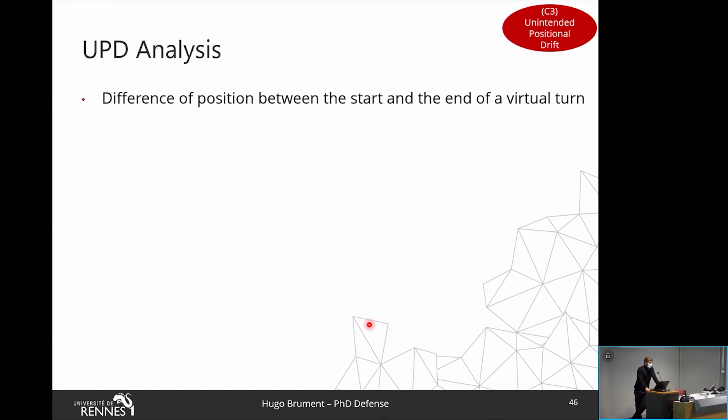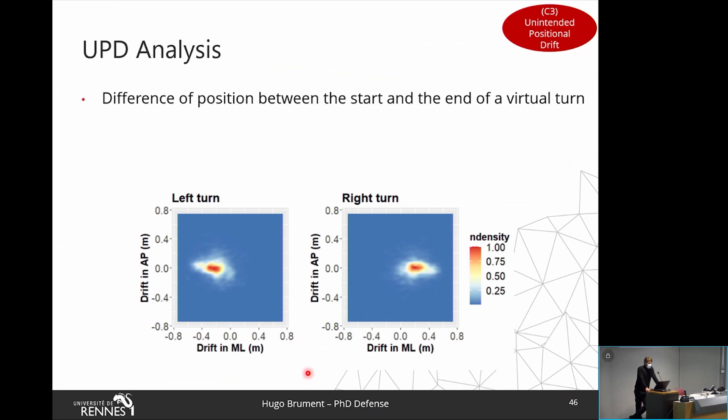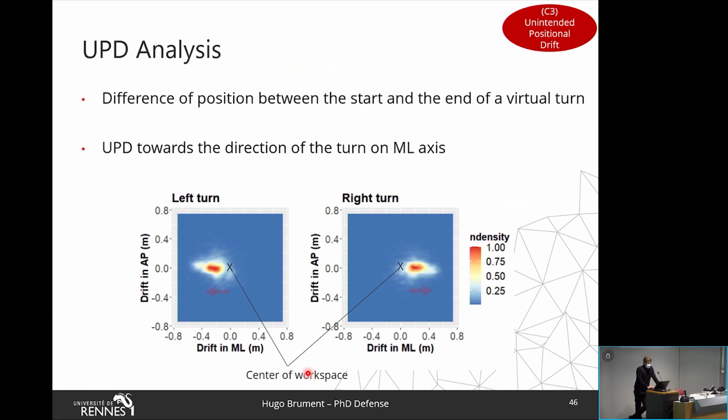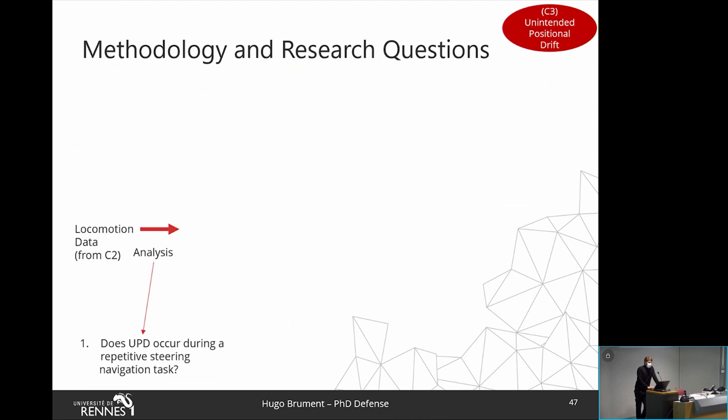Regarding the analysis of UPD, we computed the difference in users' position in the workspace between the start and end of each virtual turn. The density map shows users' position after a left turn or right turn, and there is UPD towards the direction of the turn on the ML axis — users shift leftward during a left turn and rightward during a right turn. This was statistically confirmed, with an average shift of about 20 centimeters after a turn.